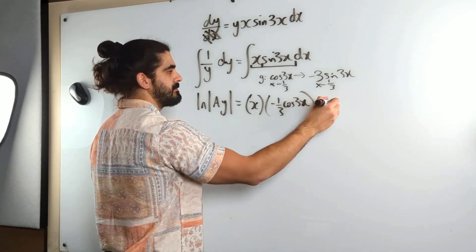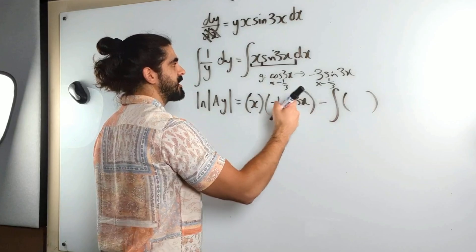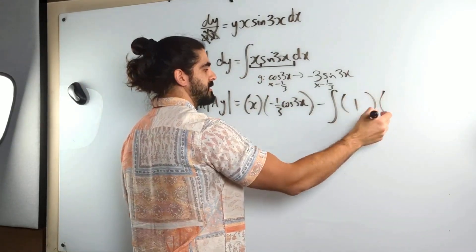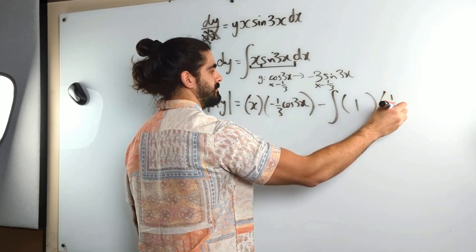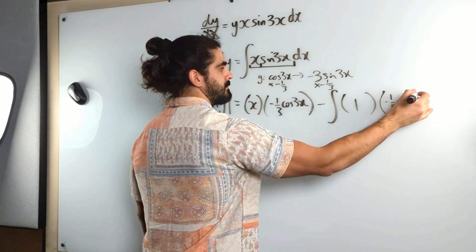Leave integrate minus the integral. Differentiate the first term is 1, then these two brackets are always the same, dx.